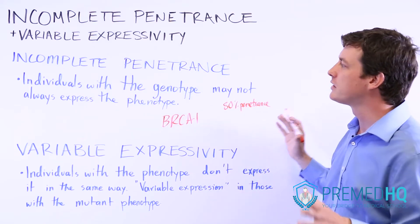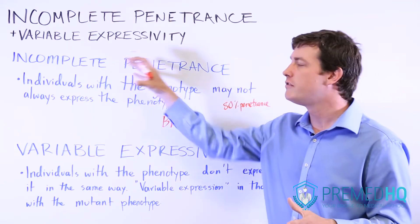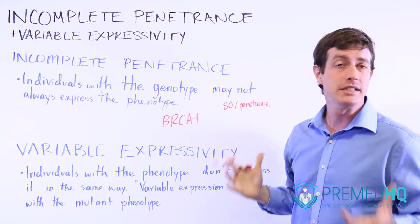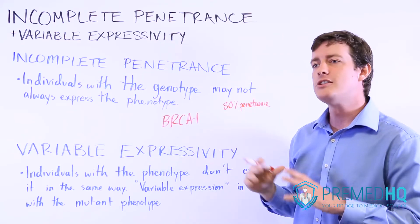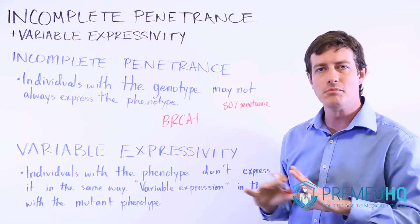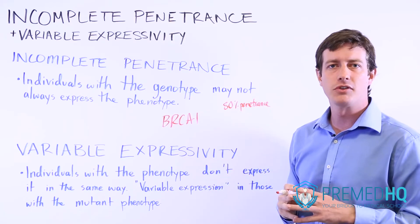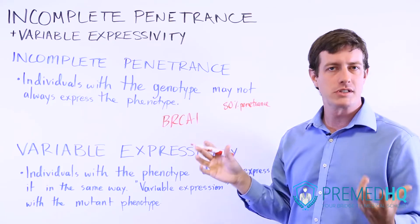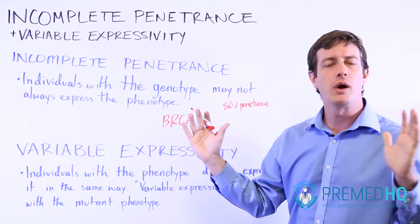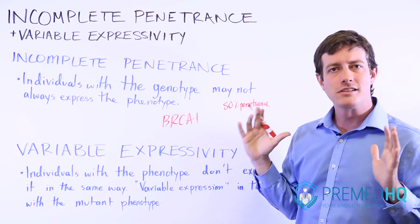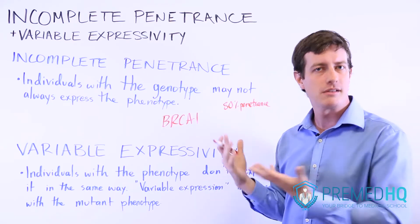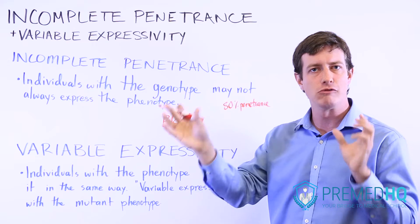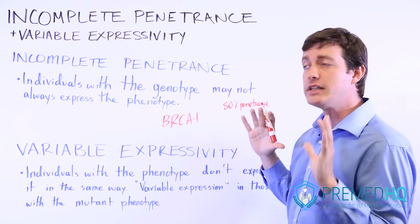Now let's contrast incomplete penetrance with incomplete dominance — two very different concepts that happen to share one word. Incomplete dominance means that the dominant allele isn't completely dominant. For example, if red is the dominant and white is the recessive allele, you'll show a blended phenotype — a pink phenotype when you're heterozygous for red and white. That's incomplete dominance.